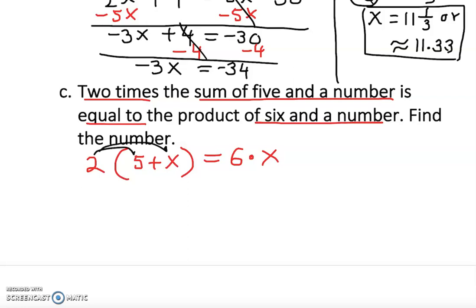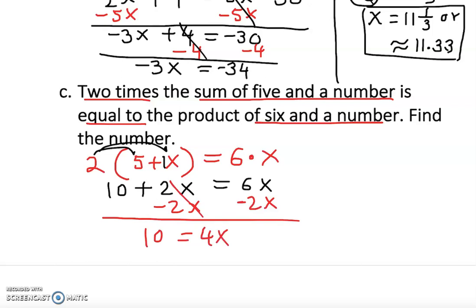Then we distribute it, so 10 plus 2x—two times x is 2x because there is an invisible one—equal to 6x. Get the variable on one side. This time I'm going to subtract 2x because I see there is a variable on the right side already. Cancel out, 10 equal to 4x. Once you have 10 equal to 4x, we're going to divide by 4. This gets cancelled out and you have x is equal to—if you reduce it, it's going to give you 2.50.